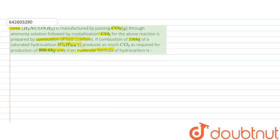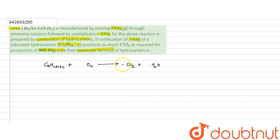First, we write the reaction for the combustion of the saturated hydrocarbon CₙH₂ₙ₊₂. The equation is: CₙH₂ₙ₊₂ + oxygen → CO₂ + water. There are n carbon atoms, so n moles of CO₂ are released. Hydrogen atoms are 2n+2, giving n+1 water molecules and (3n+1)/2 oxygen atoms. This is the balanced chemical equation, and 1 mole of hydrocarbon produces n moles of CO₂.